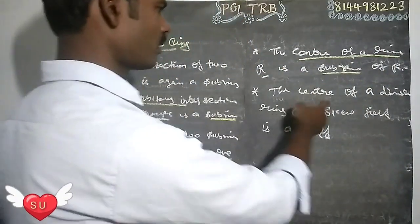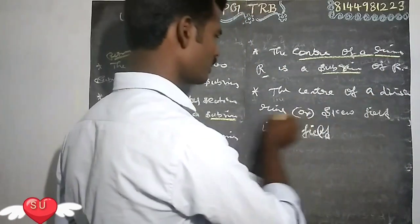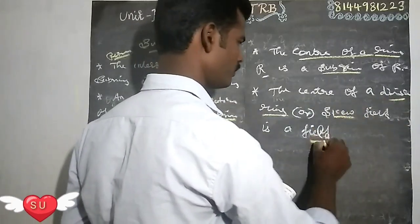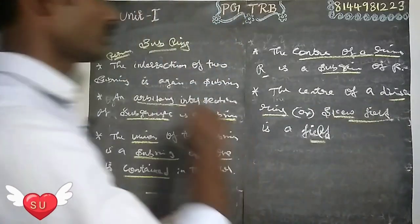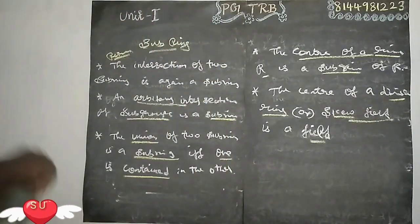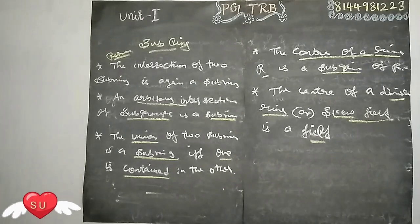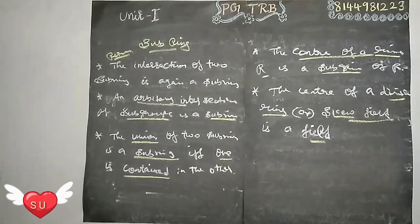The center of a division ring is a field. So the center of a ring is a subring, and the center of a division ring is specifically a field.